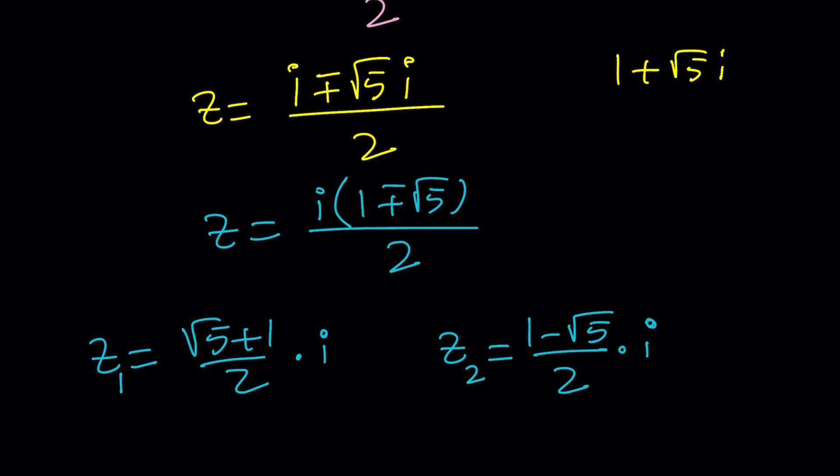Again, the solutions are multiples of i, something, some real number multiplied by i, right? That's how they are. So that's why the solutions are considered imaginary.